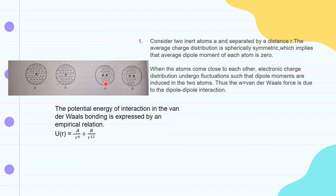In the second case, we bring these two inert atoms close to each other. What happens is that the electronic charge distribution undergoes fluctuations such that dipole moments are induced in the atoms.